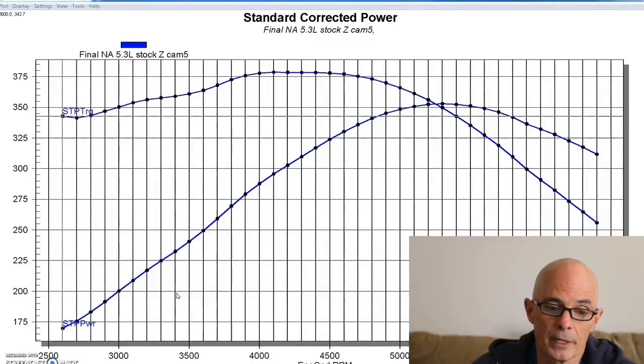So it had two things going against it. Right off the bat, it had no intercooler. So it had a much hotter charge temperature than it would with an intercooler at the same boost level. And also because there was no intercooler, we were forced to run less timing.